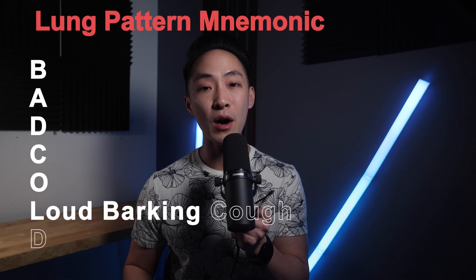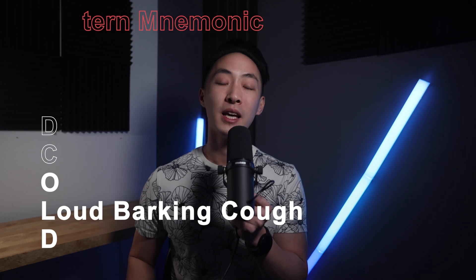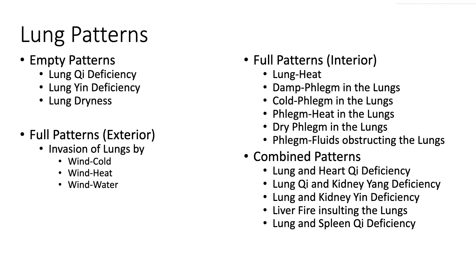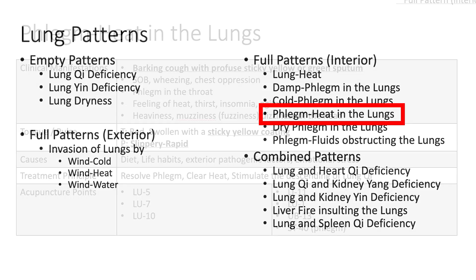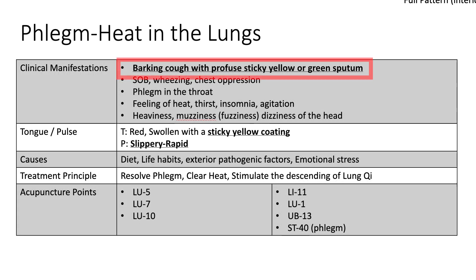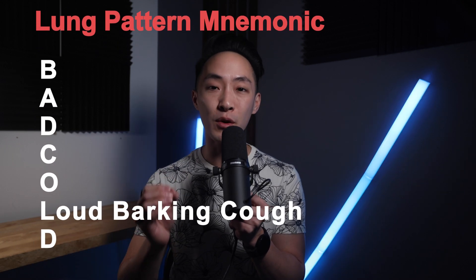Now the next letter in our mnemonic is L. L stands for loud barking cough. This comes from one of the full patterns of an interior origin — the pattern of phlegm heat in the lungs. The main clinical manifestation is barking cough, with profuse sticky yellow or green sputum. The yellow or green color indicates heat is involved. So L is for loud barking cough, associated with phlegm heat in the lungs.